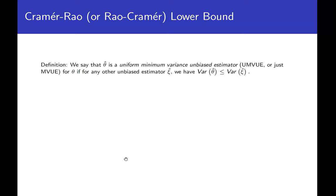Think about why you'd want an estimator with variance as small as possible. You're using the estimator to estimate a population parameter, and you'd like the probability of that estimator being far away from the population parameter to be small. The smaller the variance, the smaller the probability that the estimator is far away. Estimators of this type are called uniform minimum variance unbiased estimators, or UMVUE.